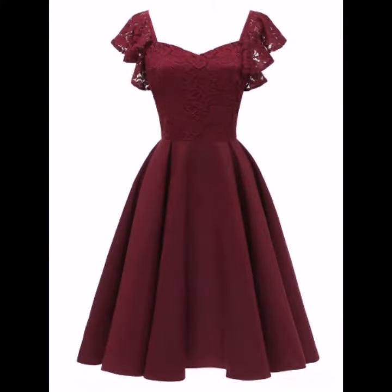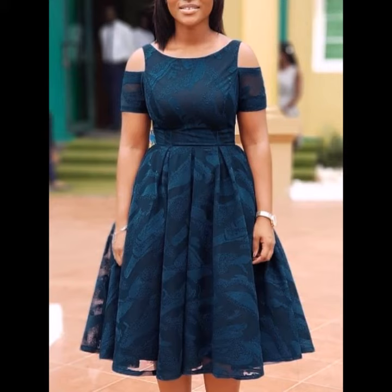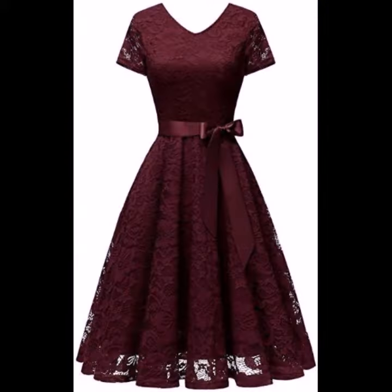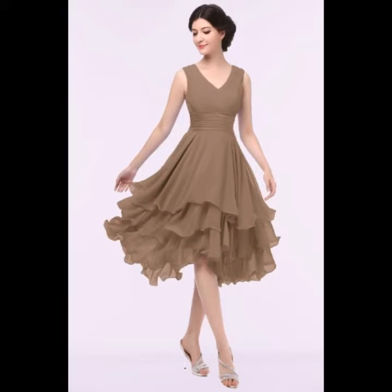A midi dress refers to a skirt that has a hem which hits at mid-calf, halfway between the knee and the ankle. Knee-length dresses have hemlines at or near the knee height. A mini dress is a very short dress that remains above the knee.